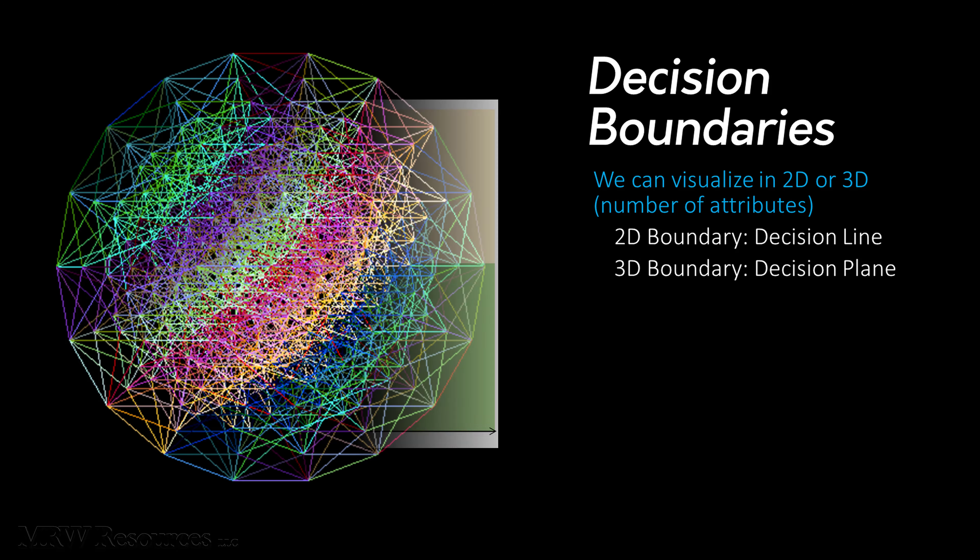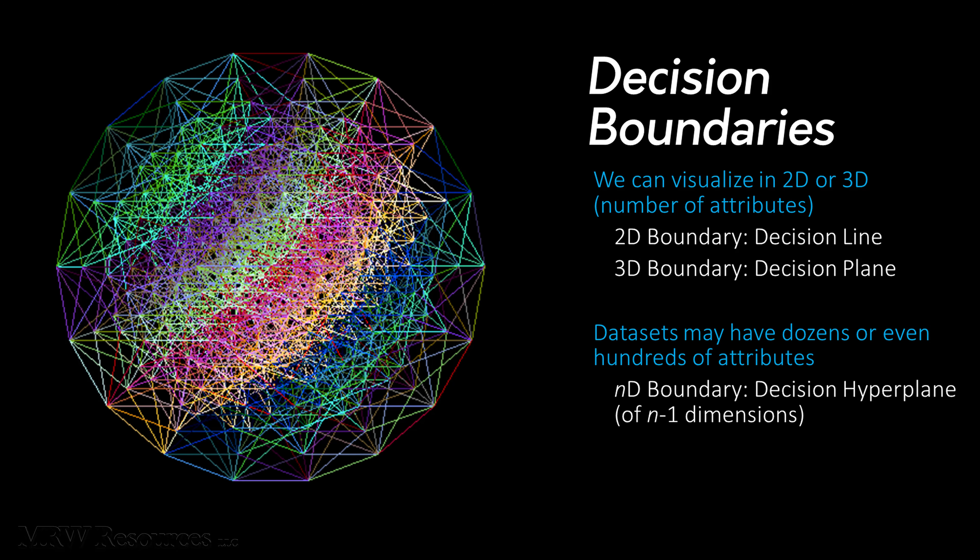Of course, data sets can have many, many attributes. When this is the case, our decision trees have what we call decision hyperplanes. Now, a hyperplane is difficult for most of us to visualize. Most of us have a tough time visualizing in many dimensions. But if you keep the notion of decision lines or decision planes in mind, and the fact that we're just extending that idea into additional dimensions, that should be helpful.